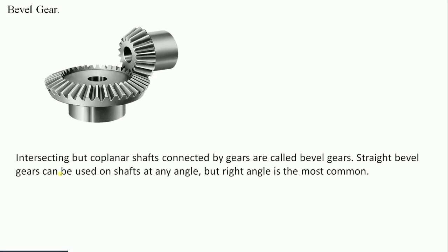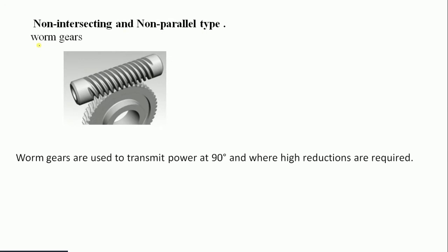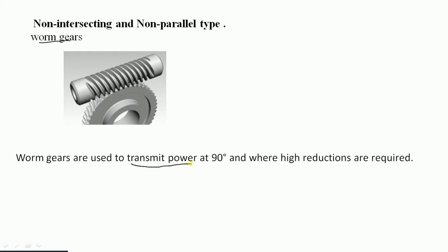In bevel gears, intersecting but coplanar shafts are connected by gears. Straight bevel gears can be used on shafts at any angle, but a right angle is the most commonly used. A worm gear is used to transmit power at an angle of 90 degrees, and is used where high speed reduction is required.